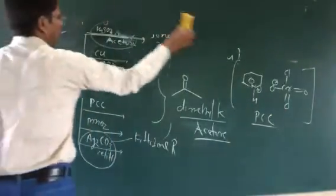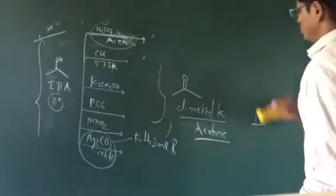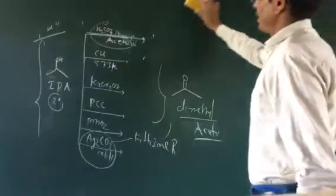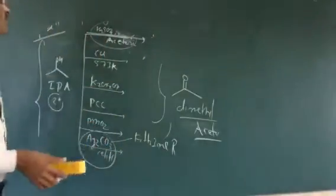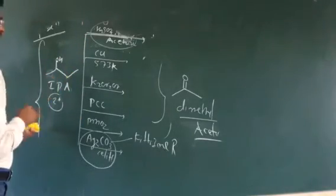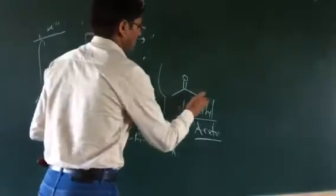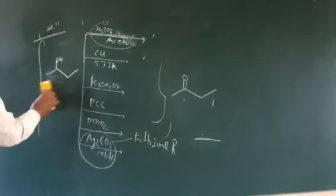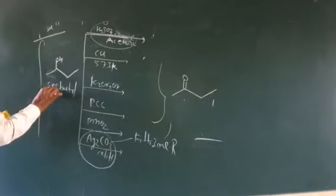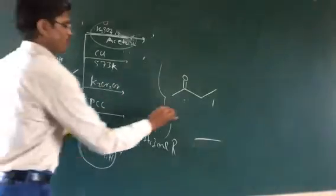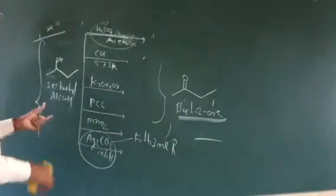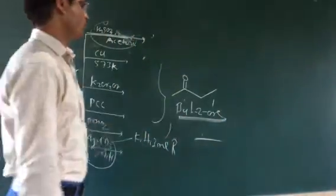These are some of the preparation methods for aldehydes and ketones. Another example: secondary butyl alcohol, when oxidized using these reagents such as potassium dichromate or PCC, gives 2-butanone. This is the preparation of 2-butanone from secondary butyl alcohol.